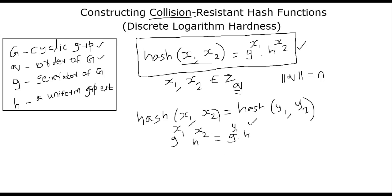And now you can just reorganize this as g power x1 minus y1 is equal to g power, or equal to h power rather, h power y2 minus x2. Now, one important low level detail you need to notice is that y2 minus x2 cannot be 0.